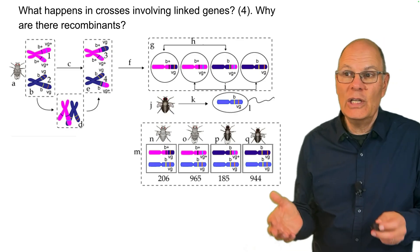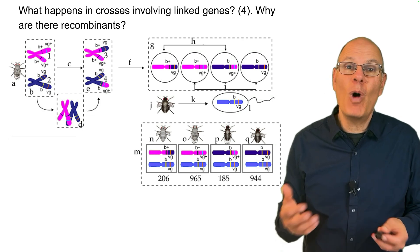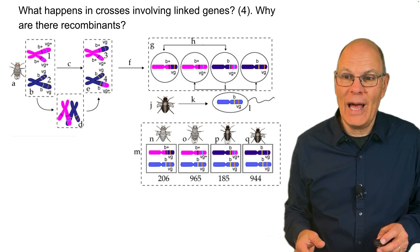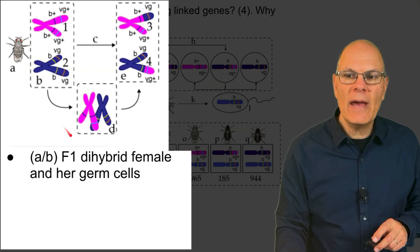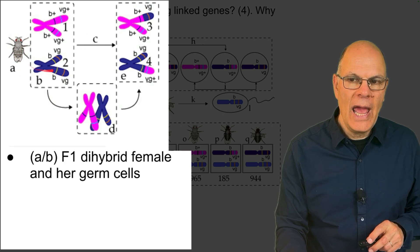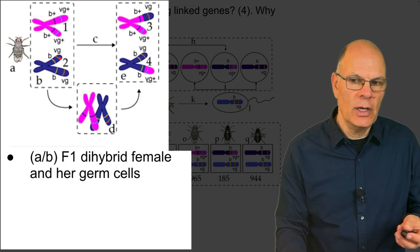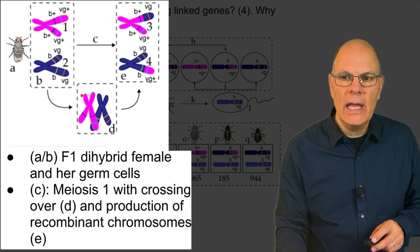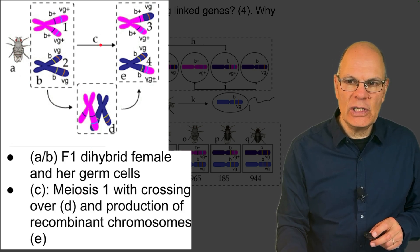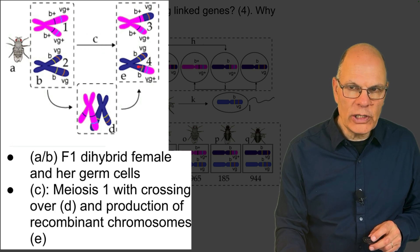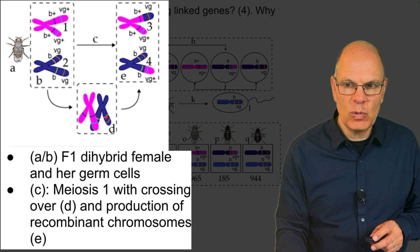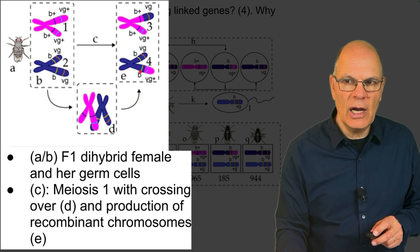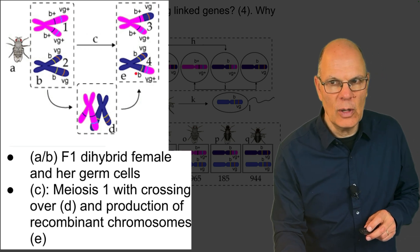What happens in crosses involving linked genes — why are there recombinants? In diagrams A and B, we have a dihybrid female and her germ cells. In C, we have meiosis I with crossing over. Homologous pairs come together, swap genes, and produce recombinant chromosomes.